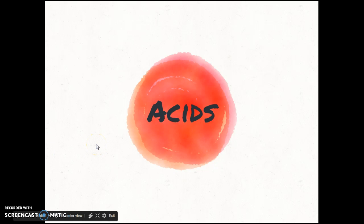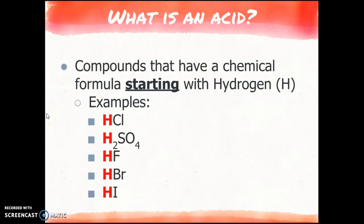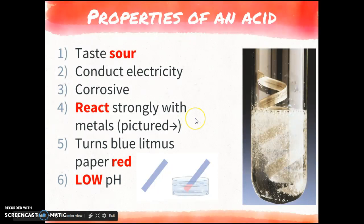So let's talk about acids first. These are probably the ones that you're the most familiar with, and they will all start with the letter H. So if you look at all of these examples, you'll notice that they start with the letter H, and it's a capital H, so that should indicate to you that it is the element hydrogen. They taste sour, like lemons. They conduct electricity. They are corrosive, which basically means that they can eat through things, and they react strongly with metals, as seen here.